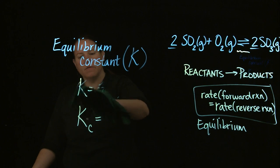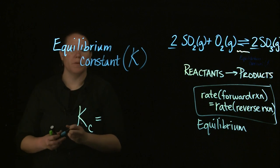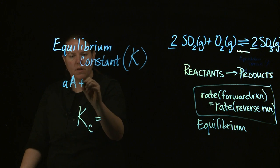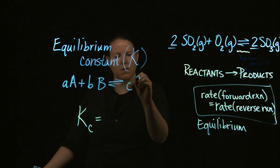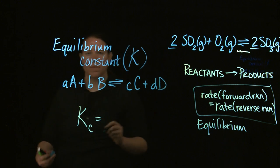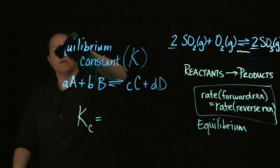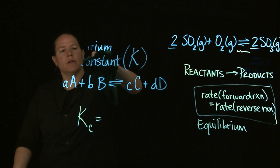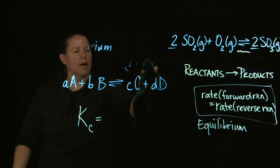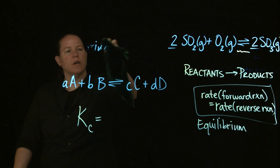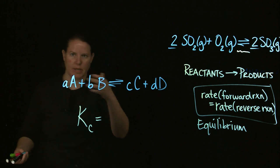Let's erase this for a minute. If we had a generic formula — where these lowercase letters are the stoichiometric coefficients for each species, and the capital letters represent a reactant or product (which can be a compound or an element) — then we can define Kc. The stoichiometric coefficients are signified by the lowercase letters, and the capital letters designate some reactant or product.